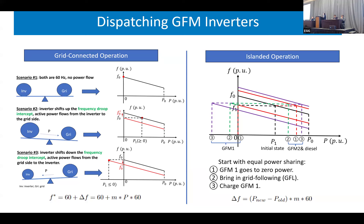For islanding operation, everyone thinks droop is used for power sharing — the old-school approach. But grid-forming in islanding mode can also be dispatched like a grid-following inverter by playing with droop. If you have a target power — say your battery is low and you want to charge — you calculate the delta_f shift based on the dispatch rule. This is very simple and effective for controlling grid-forming inverters in islanding mode to output target power. You can apply this same rule to all inverters to achieve specific target power outputs.